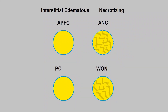So, revisiting the second slide — hopefully this now makes more sense. The interstitial pancreatitis fluid collections and the necrotizing collections, two each. The APFC is homogeneous without a discrete wall, maturing to the classic pseudocyst with a more discrete wall. The necrotizing fluid collections have no discrete wall and heterogeneous contents. As time goes on, they maintain heterogeneity but a nice wall is formed — the walled-off necrosis.